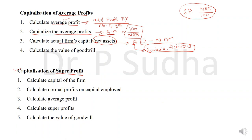Now calculation of goodwill is very easy. The answer that you got in the second step — capitalization of average profit — minus whatever net asset you got in the third step. So goodwill is nothing but capitalized value of average profit minus net asset. This will give you the value of goodwill.